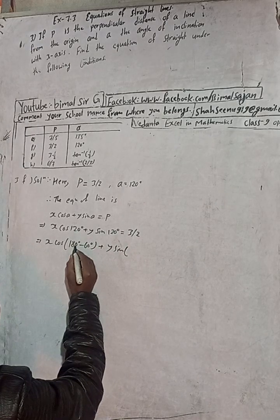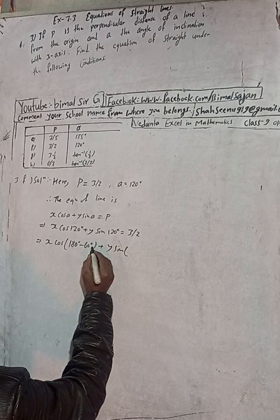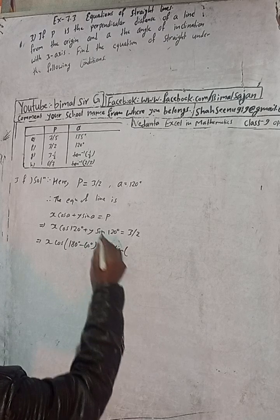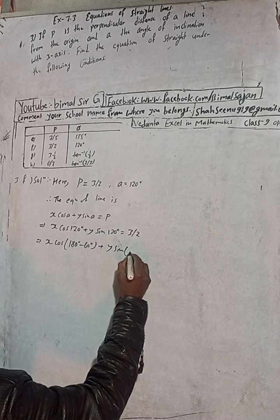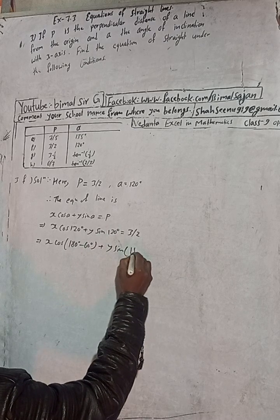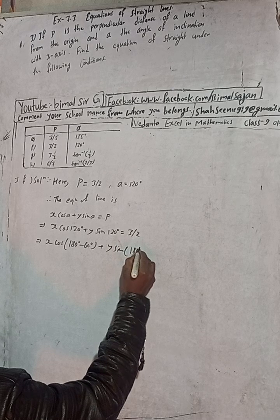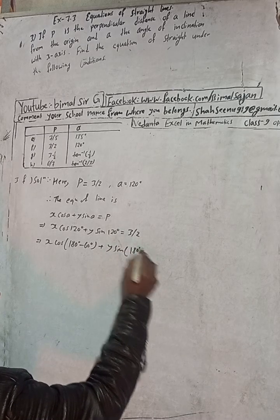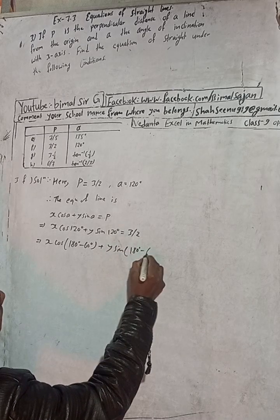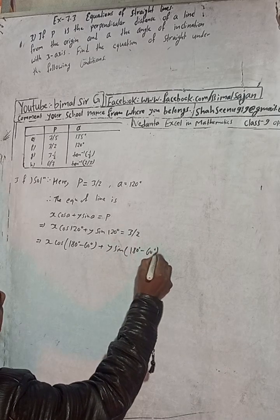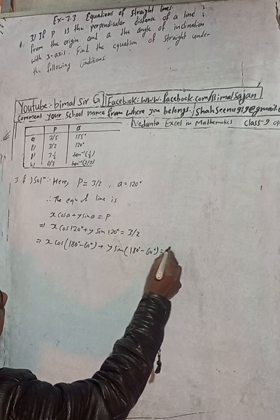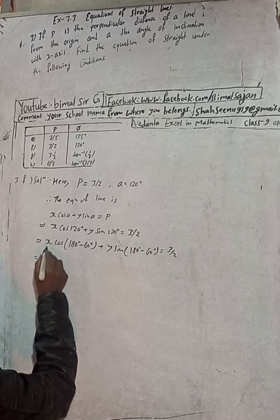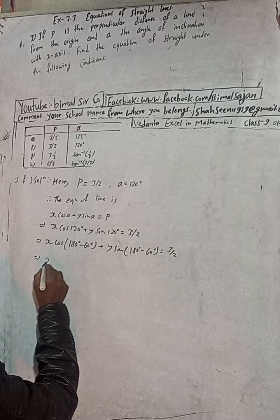Resuming: 120 degrees equals 180 degrees minus 60 degrees, so cos 120 = cos(180 - 60). Similarly, sin 120 degrees can be written as sin(180 degrees minus 60 degrees), and 3/2 remains as is.